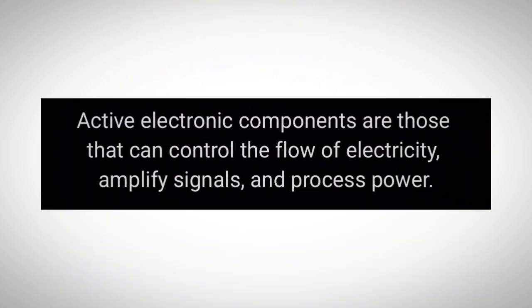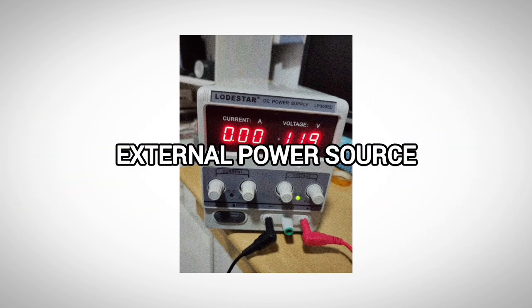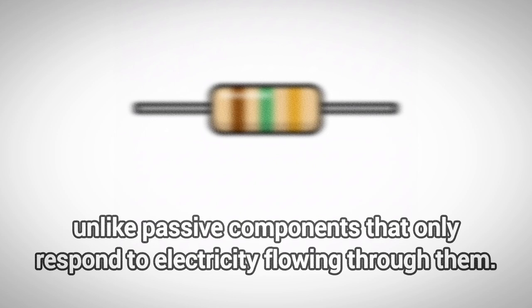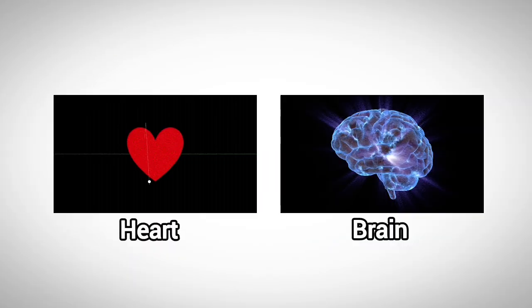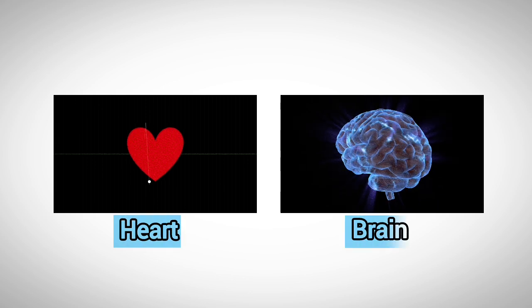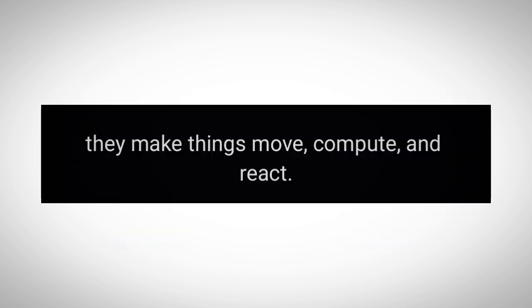Active electronic components are those that can control the flow of electricity, amplify signals, and process power. They need an external power source to work, unlike passive components that only respond to electricity flowing through them. These active parts are basically the heart and brain of every electronic circuit. They make things move, compute, and react.